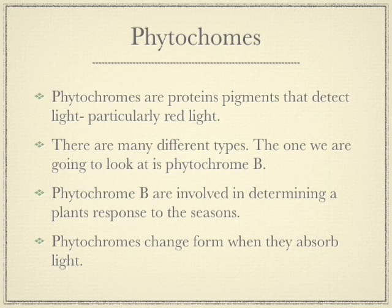Phytochrome B is the main one that determines a plant's response to the seasons. Phytochromes actually change form when they absorb light. They are produced in one form in the darkness, and when light touches them through the leaves, they actually change to a different shape, even though they're the same chemical.